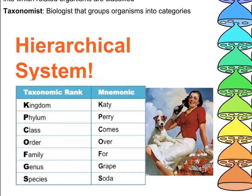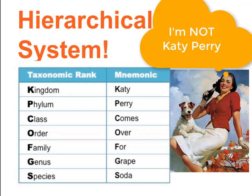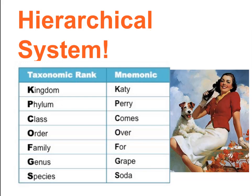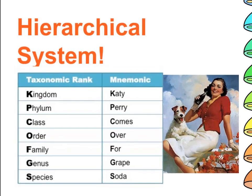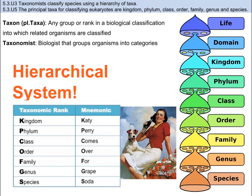It's probably good for you to come up with a mnemonic to remember the order. One example is 'Katy Perry comes over for grape soda.' You need to remember it for sure, so use this one or come up with your own. Additionally, there are some specific characteristics of the taxa that you must get to know, so let's learn a little bit more about life.